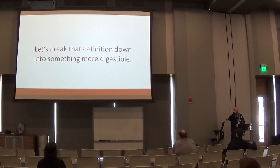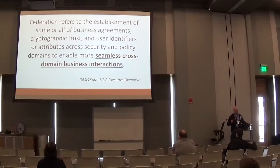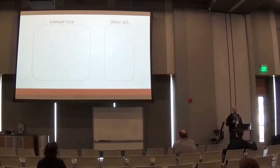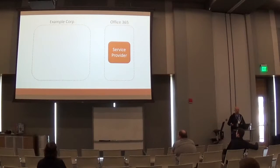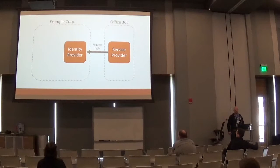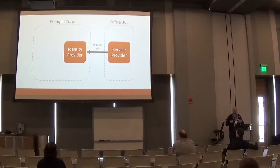Let's break this down into something more digestible. The big thing these protocols try to do is make it seamless in the way you do business between two parties. Take Office 365 as an example — anyone use Office 365 in their organization? Office 365 is, in the language, a service provider. They're offering a service to you, but they don't necessarily want to be the ones authenticating their users. So in this model, they delegate this to your identity provider. As you go through the login process, they'll send you to an identity provider, making this seamless across organizations.